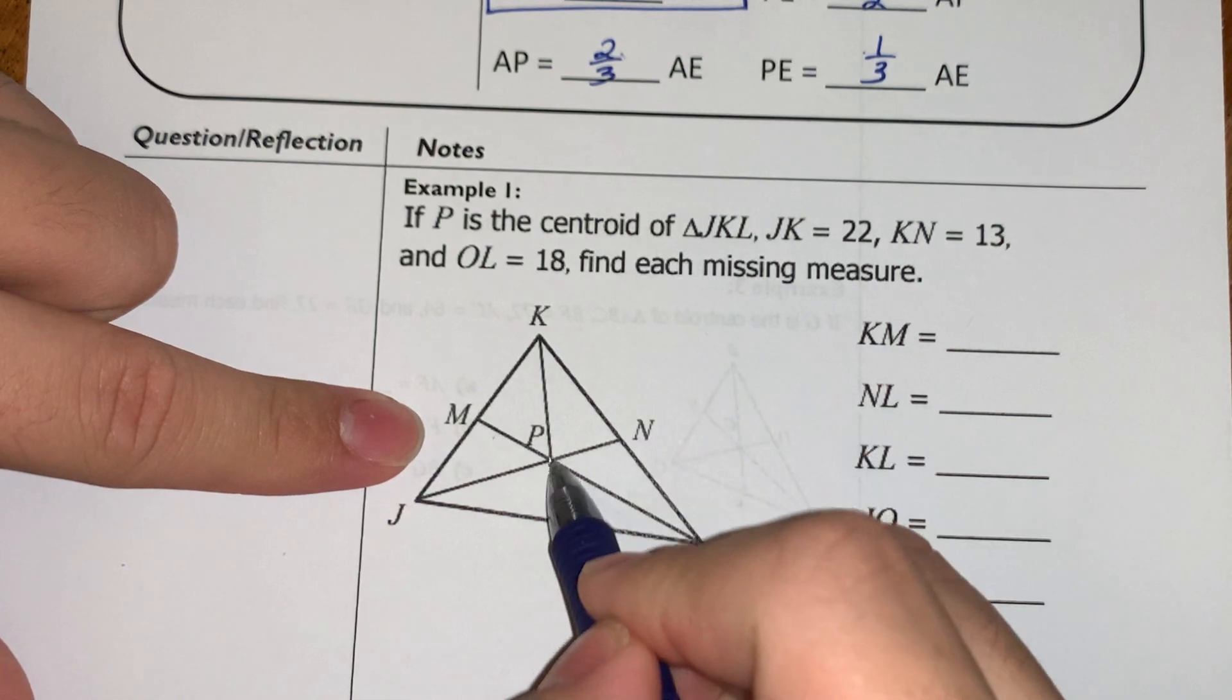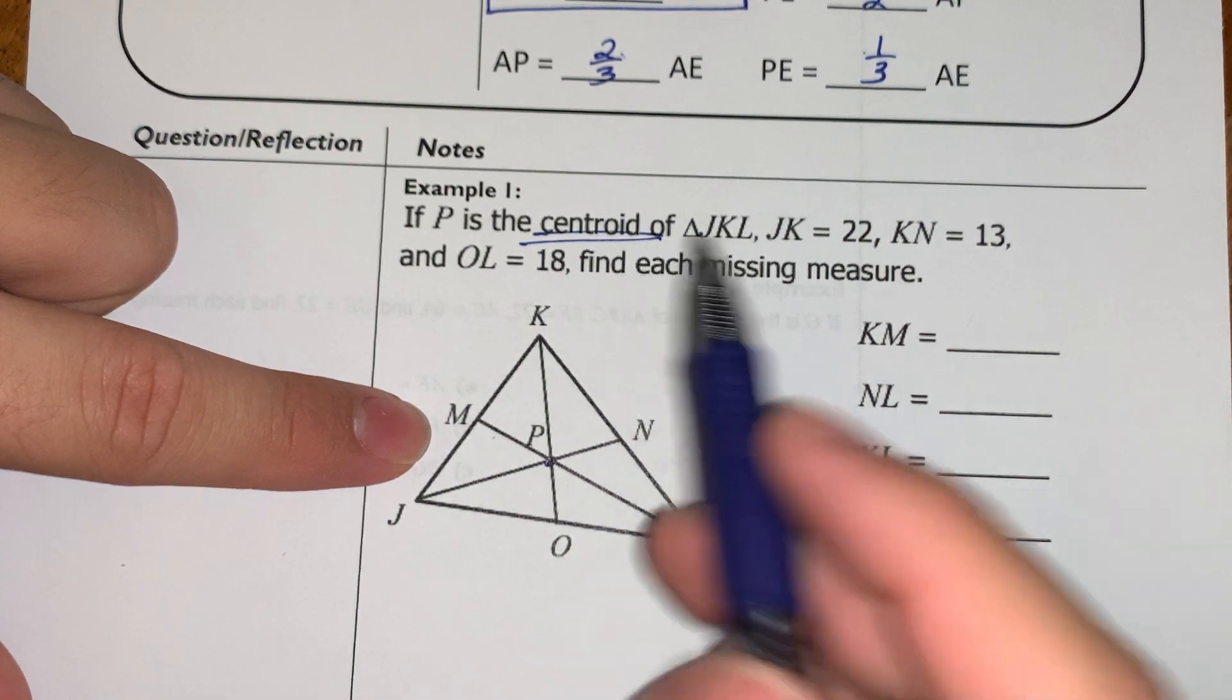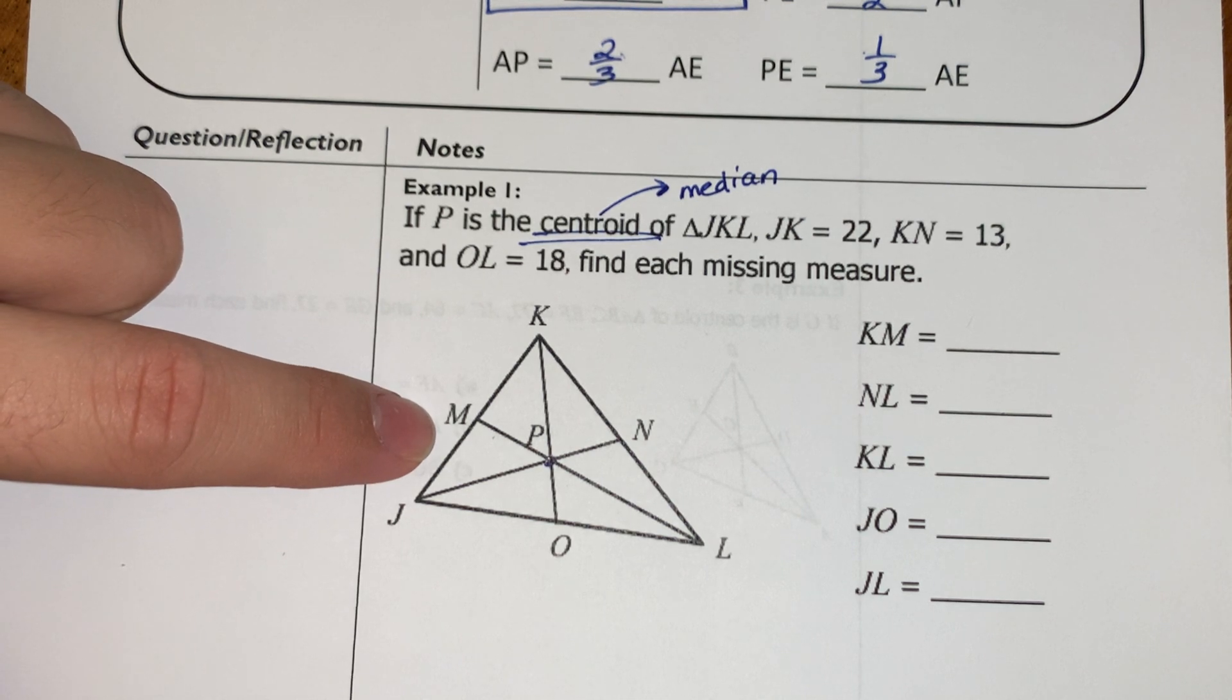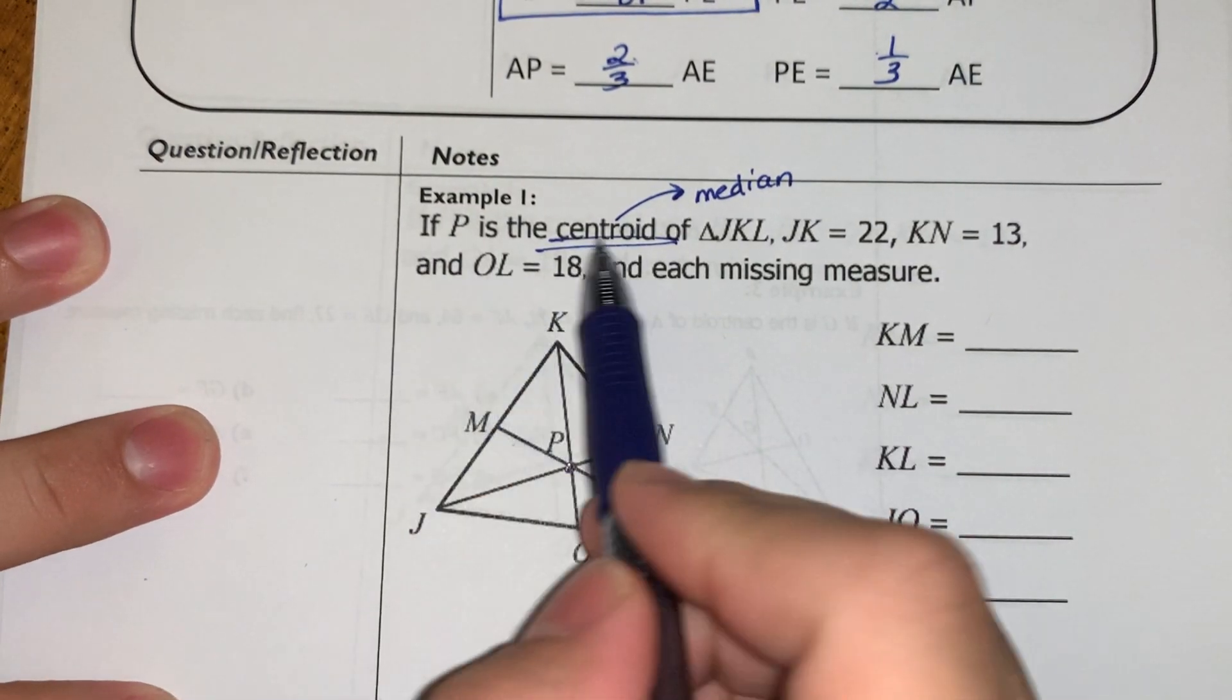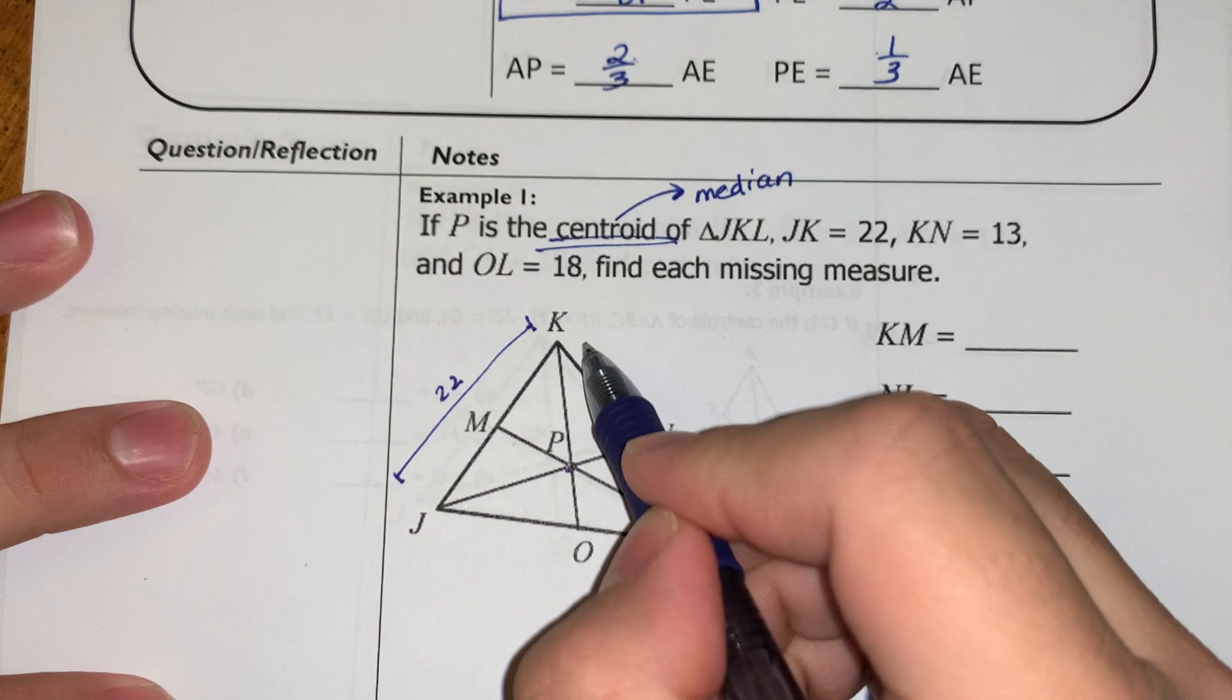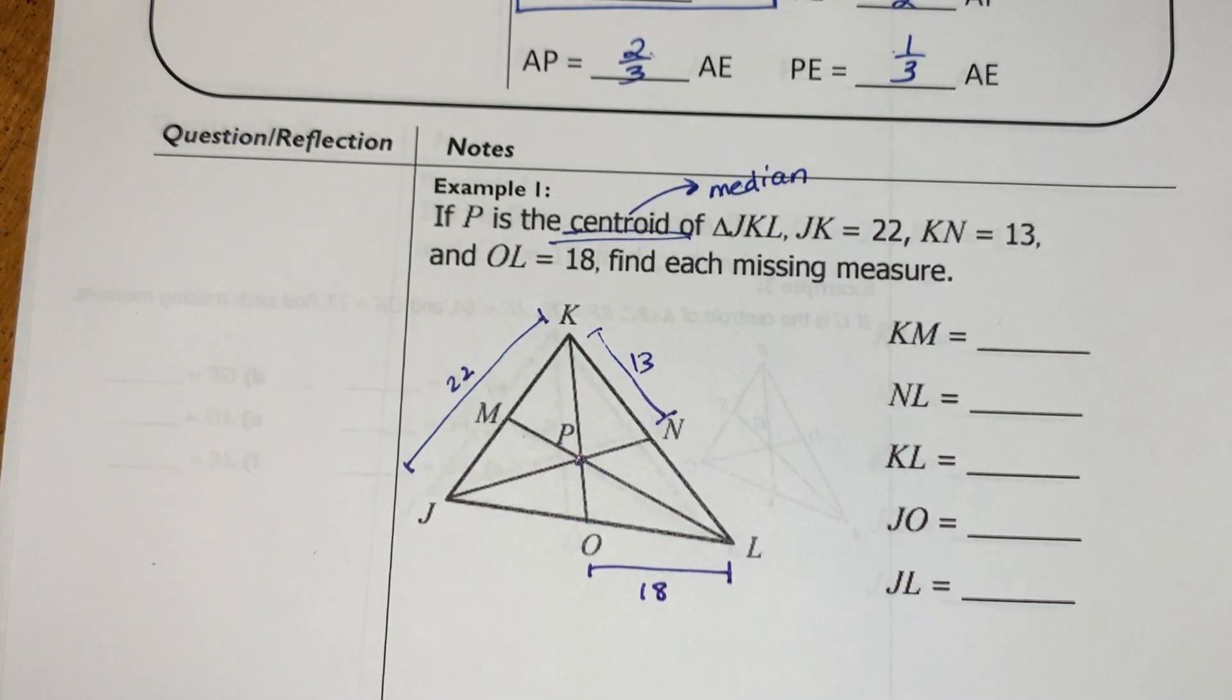So if P is the centroid, and I'm going to underline that every time I read these problems. Make sure that you know the difference between centroid. And I always do this too. If I have centroid there, I always just say centroid is medians. So if P is the centroid, which is created by the medians of triangle JKL, JK is 22. So this entire length right here is 22. KN, this length right here, is 13. And OL, this length right here, is 18.